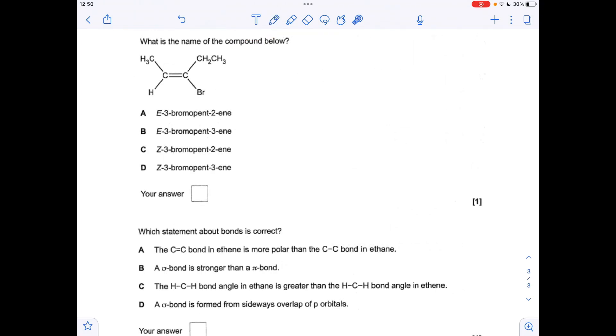Moving on to the next one. So all of the options are pent. So we don't have to establish the longest carbon chain. We've just got to position the double bond. So the shortest number is carbon 2. So it's a pent-2-ene. The bromine is therefore on carbon 3. So it's a 3-bromopent-2-ene. And now we've just got to decide if it's E or Z.